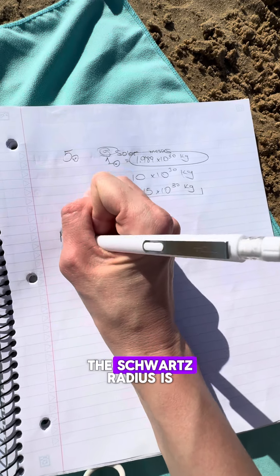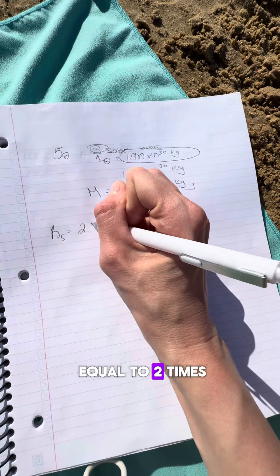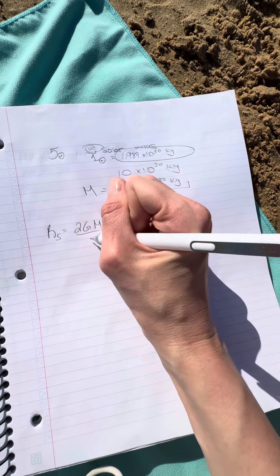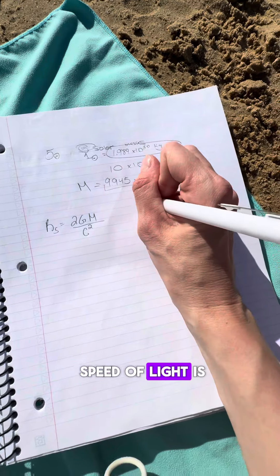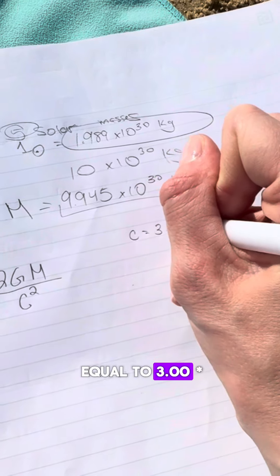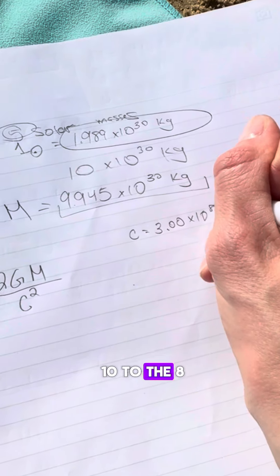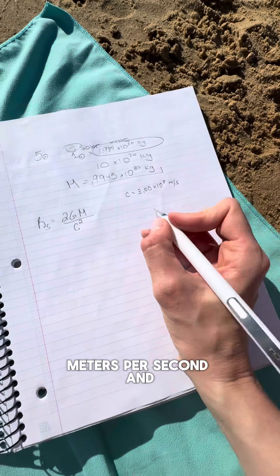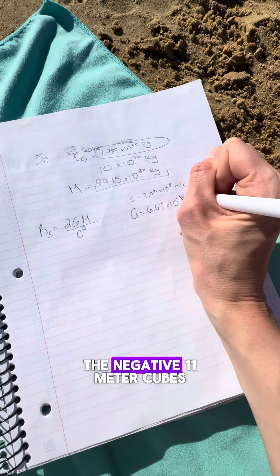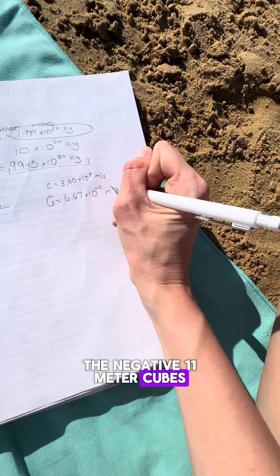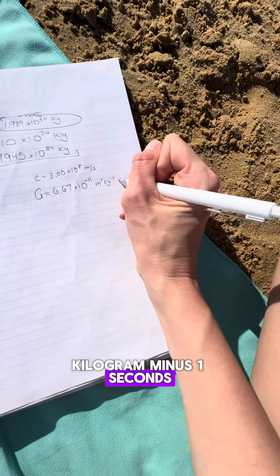We know that the Schwarzschild radius is equal to 2 times G times m over the speed of light squared. The speed of light is equal to 3.00 times 10 to the 8 meters per second, and the gravitational constant is 6.67 times 10 to the negative 11 meter cubed kilogram minus one seconds to the minus two.